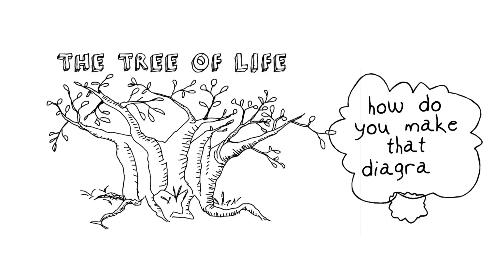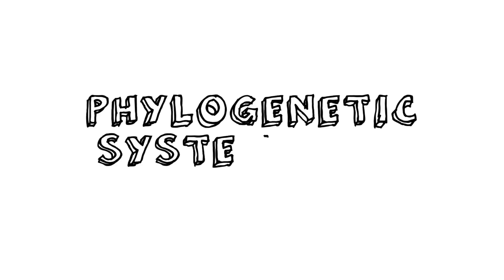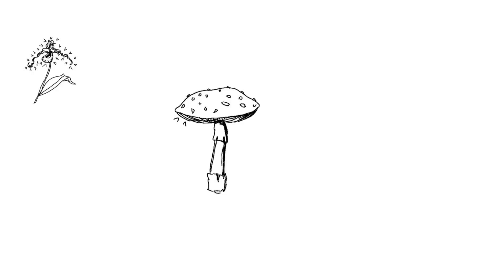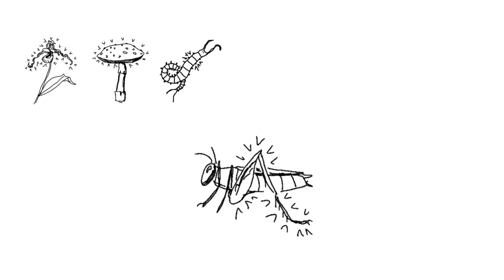But how do you make that diagram? What do you need to know that will allow us to assemble that tree of life? What we are talking about is a science known as phylogenetic systematics. Phylogenetic patterns are made up of characters—features you can observe in organisms. What it really means is that a unique feature of an organism represents a unique event in the evolutionary history of that organism—an event that marks the first appearance of that feature.